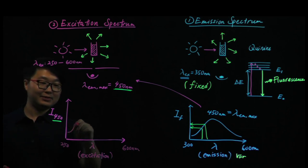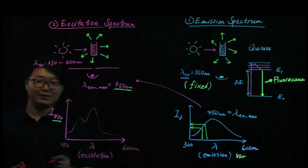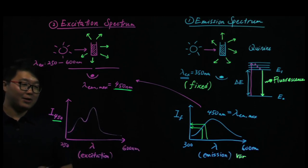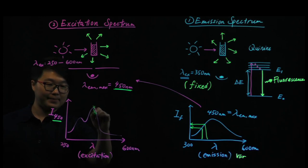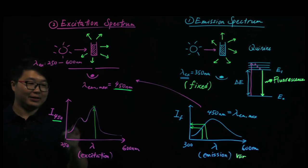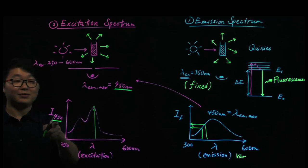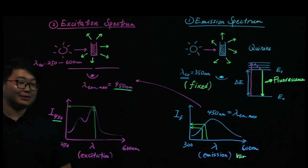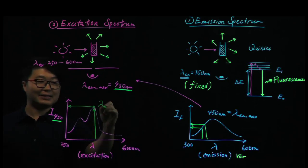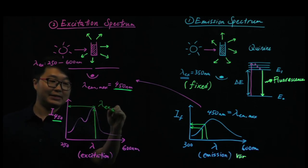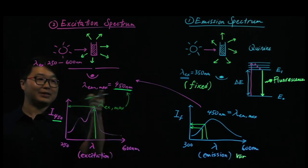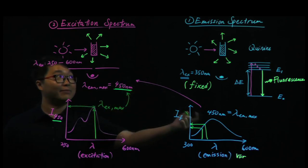So you may obtain a spectrum that looks something like a peak shape. Based on this excitation spectrum, we can see that a particular excitation wavelength gives us the highest emission intensity for the emission peak at 450 nm. This wavelength gives the highest intensity. So when we choose the excitation wavelength for subsequent investigations, we choose the one that gives us the highest emission intensity at the emission peak we obtained from the emission spectrum.